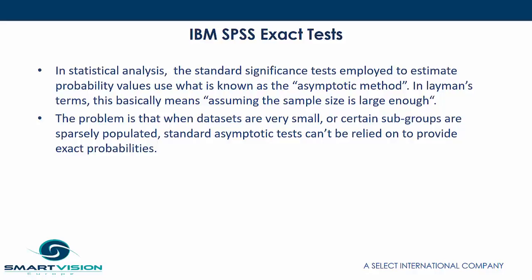In statistical analysis, the standard significance tests employed to estimate probability values use what is known as the asymptotic method. In layman's terms, this basically means assuming that the sample size is large enough in order to do the test. The problem with that is, when datasets are very small or certain subgroups are sparsely populated, standard asymptotic tests cannot be relied upon to provide exact probabilities.